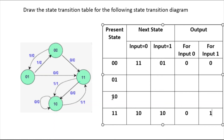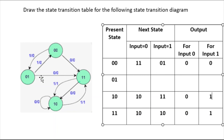Now come to one-zero state. One-zero has no transition for zero input — so next state is one-zero and output is zero. For one input, the next state is one-one and output is one. Now come to zero-one. For zero input it is going to one-one and output is zero. For one input, zero-one is going to zero-zero and output is zero.